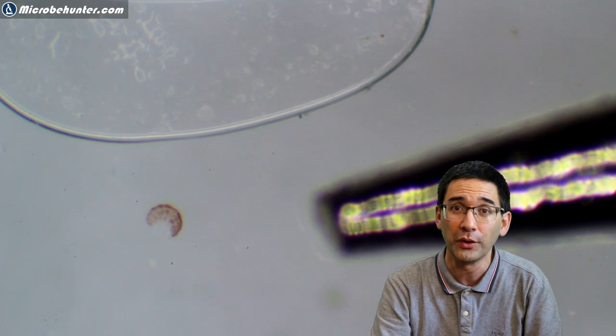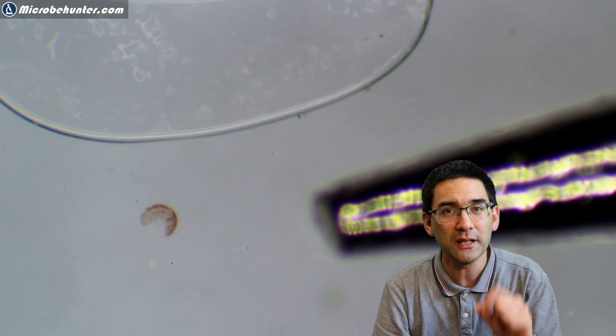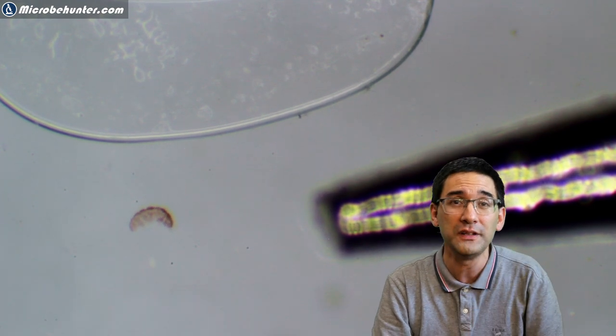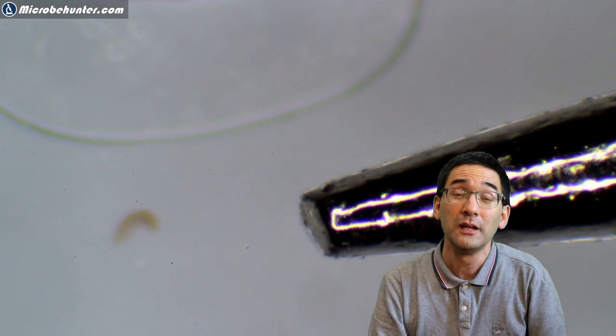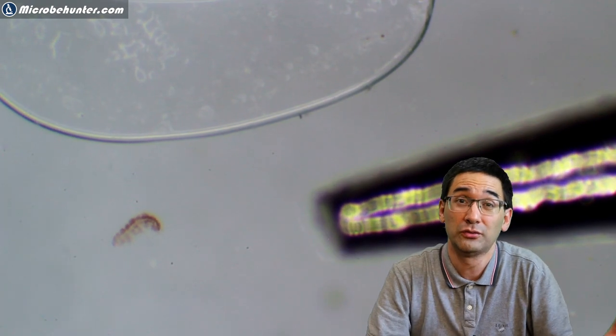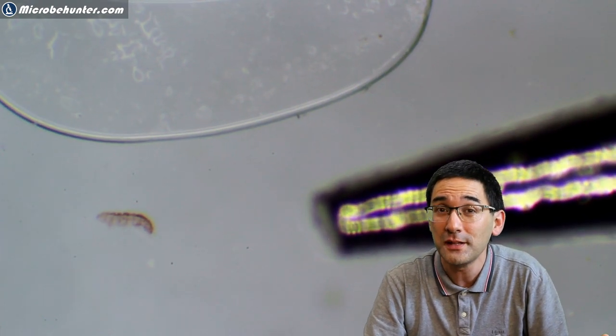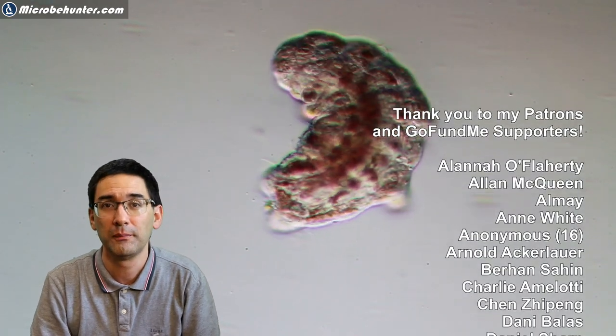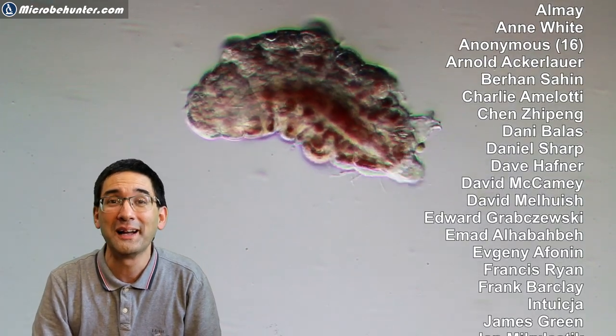You should be able to see that a tardigrade is small enough that it would fit on the tip of a needle. But there are larger ones as well, because there are around 100 different tardigrade species, and some of them are significantly larger. But I think you get the idea that many of them are actually quite tiny.